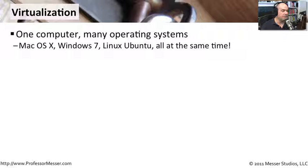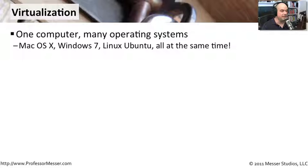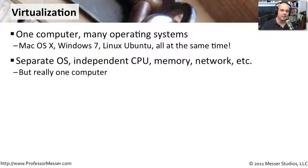On my computer, I might be running Mac OS X. I might have a Windows 7 system up at the same time. I might have a Linux box also running at the same time, another Windows server somewhere else. It's using all of the same hardware, but now I've got multiple operating systems — all independent computers, all running on a single CPU and a single set of memory.